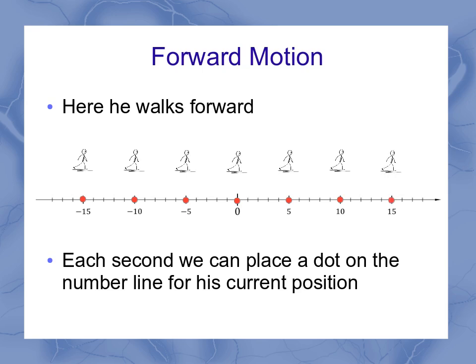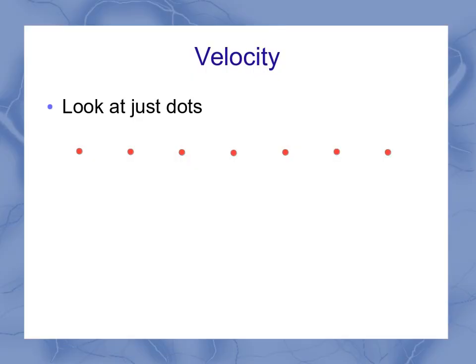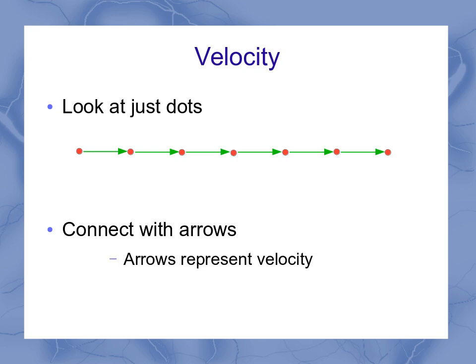Now, I'm going to simplify this a little bit by looking at just those dots. So these are the same dots we had on the diagram before. I can then connect those with arrows. Each arrow represents how he moved from one second to the next. And therefore, those arrows can represent the velocity, the motion, the displacement moved in a certain amount of time.